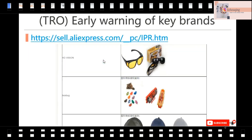Here is also an early warning list of key brands published by AliExpress. Click this website to check all the brands that are potentially at risk. For example, 'HD Vision' and 'Hex Bug' — you cannot use these as keywords. Remember to check this website, find these brands, and avoid using them as keywords.